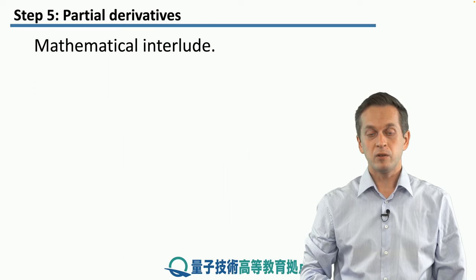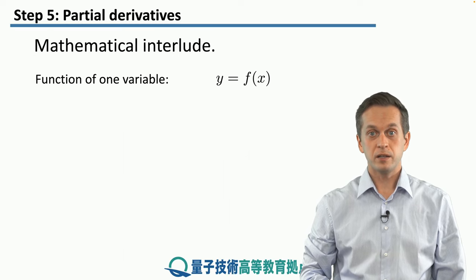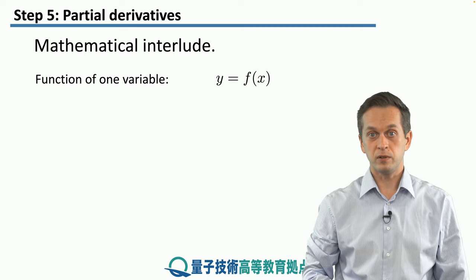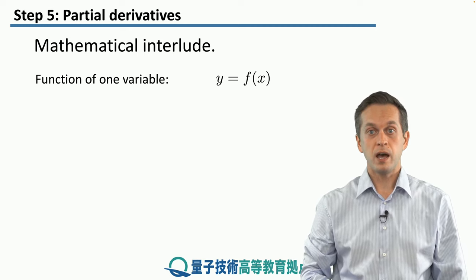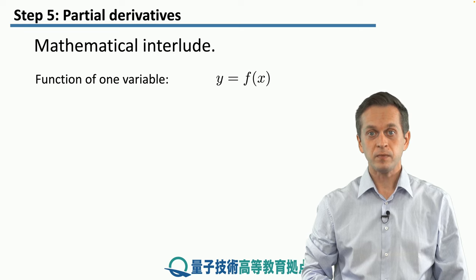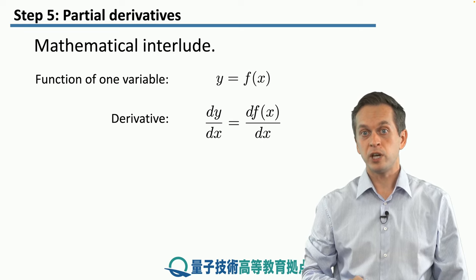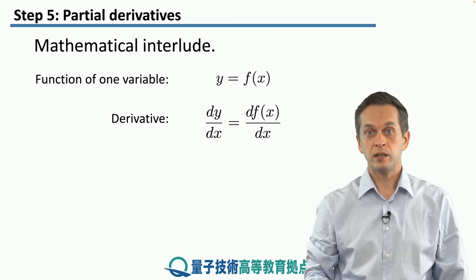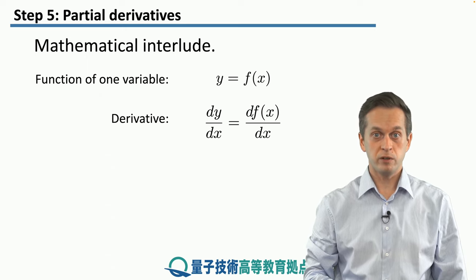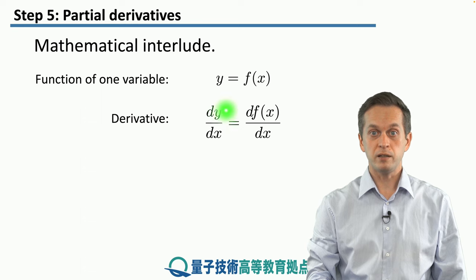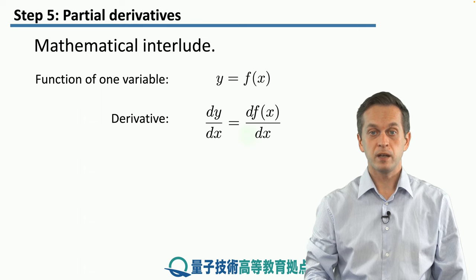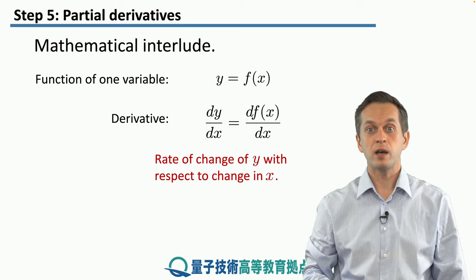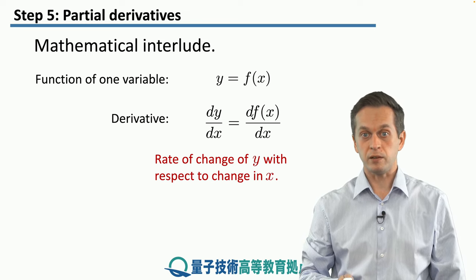So let's begin with a function y that is a function of a single variable. So we've got y is equal to f(x). If we want to know what the change of y is as we vary x, that's given by the ordinary derivative dy/dx. The way we read it is: the rate of change of y with respect to change in x.